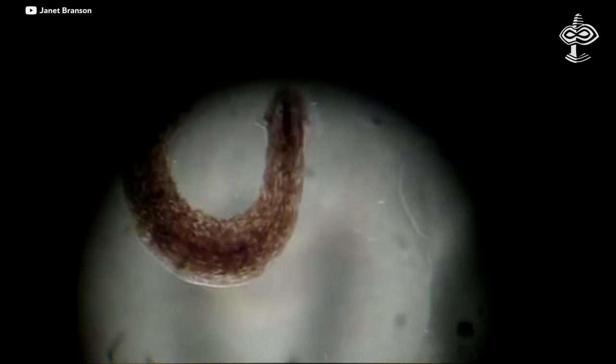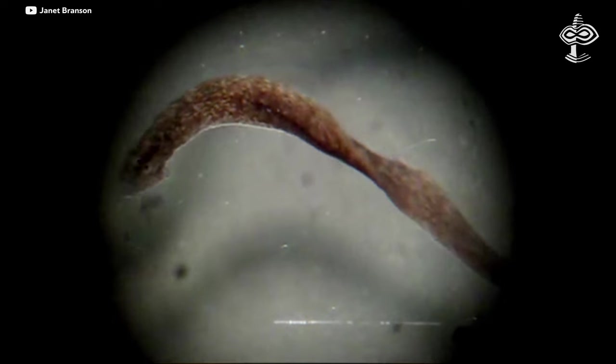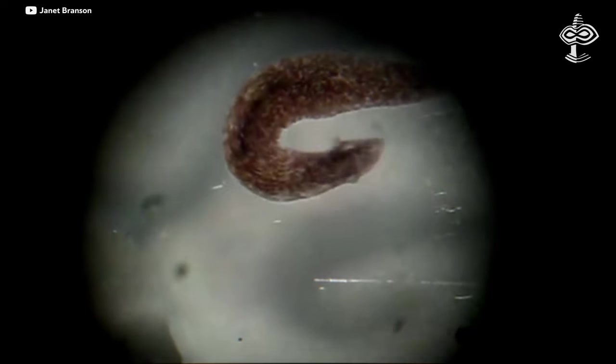Planarian flatworms are a prime example, as they can regrow any part of their body until the correct anatomy is complete, after which growth stops. The big mystery is how the system identifies the correct target shape, orchestrates individual cell behaviors to achieve it, and determines when the job is done.